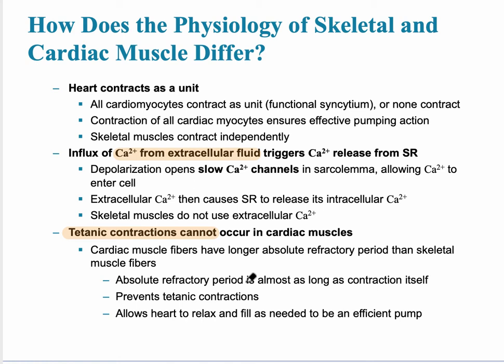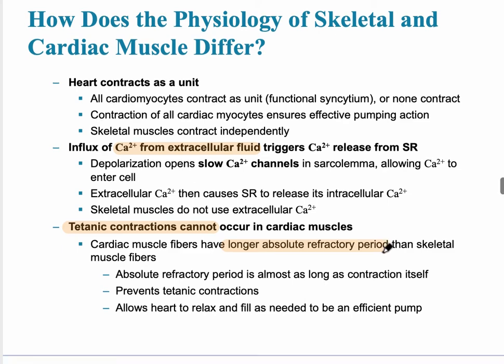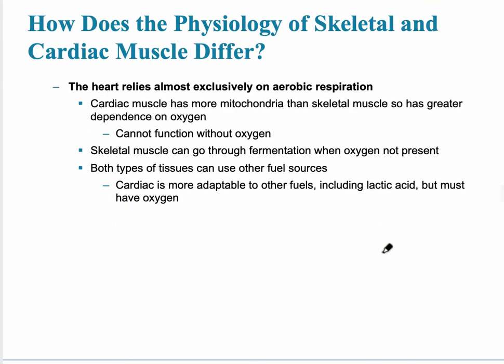Tetanic contractions cannot occur in cardiac muscle. In skeletal muscle, action potentials add up and combine to produce a sustained contraction. This doesn't happen in cardiac muscle because there is a longer absolute refractory period, which prohibits another cardiac muscle contraction. The heart also relies on aerobic respiration, evidenced by the large amount of mitochondria in cardiac muscle, meaning it absolutely cannot function without oxygen.